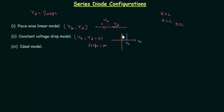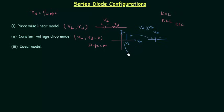Before barrier potential Vb, current is 0, and once barrier potential is reached, current increases significantly. This is Vd, voltage across the diode, and Id, current through the diode. The circuit contains a plus-minus Vb source. When Vd is greater than or equal to Vb we use this model, but when Vd is less than Vb, we replace the diode with an open circuit. We must remember these two models to solve numerical problems.